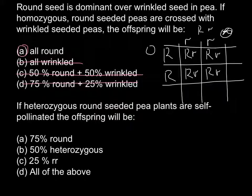Second question: if the heterozygous round-seeded pea plants are self-pollinated, the offspring would be?